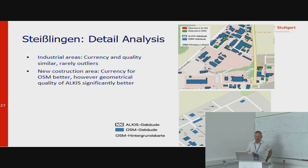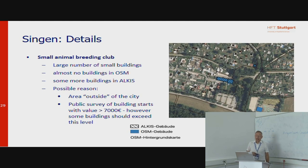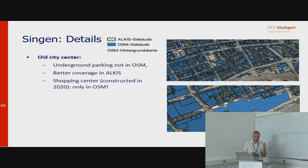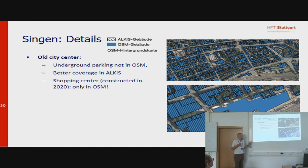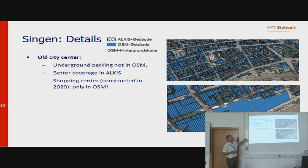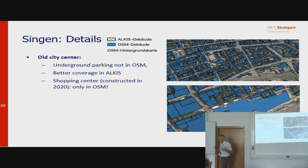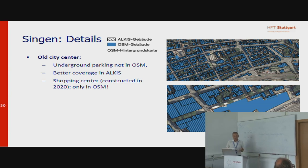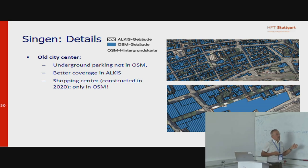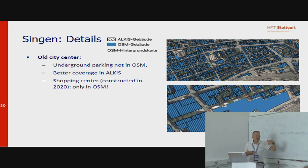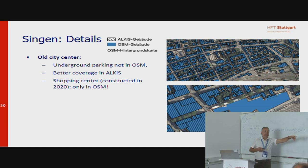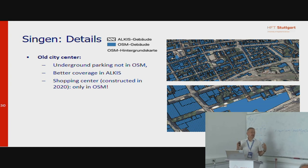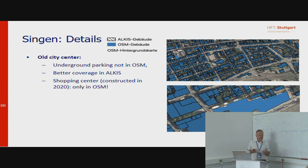Moving on to other examples — for instance, in a city called Singen with about 50,000 inhabitants — we noticed that some things which are not visible cannot be found in OSM either, like underground parkings. Nevertheless, the official surveyors have to survey such buildings too. But there are other things, like a shopping center constructed in 2020 that is visible in OpenStreetMap but not yet in the official data. You can imagine it is just a huge building, and if anybody does any analysis or planning regarding the situation, they will not have this building in the cadastral map.